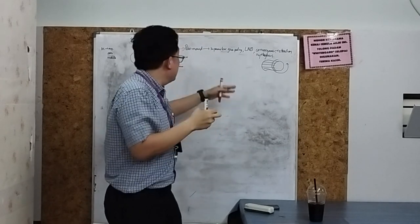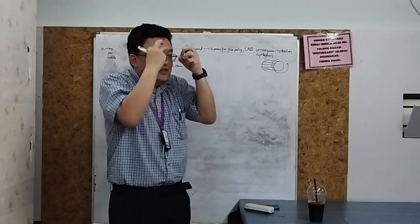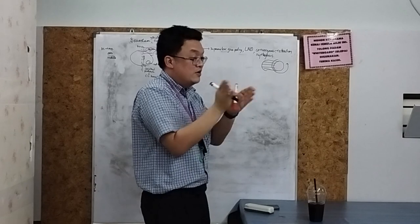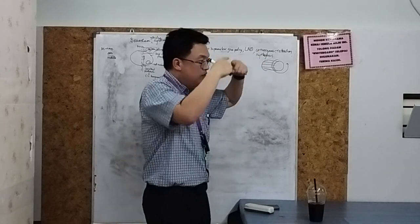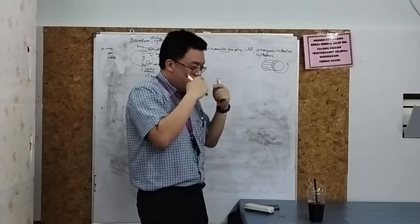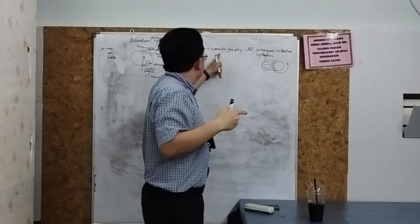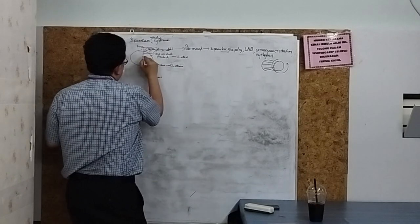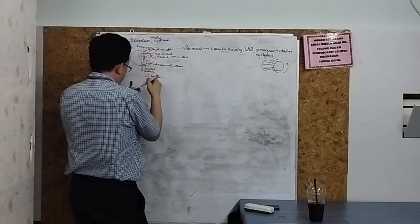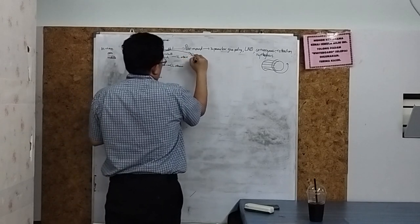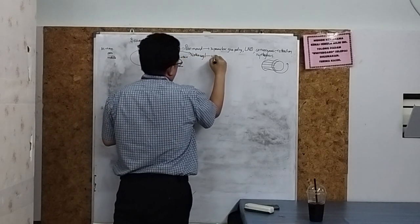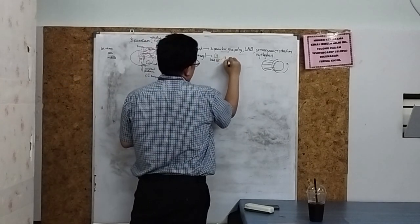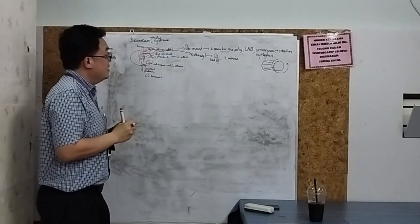You also get convergence-retraction nystagmus in Parinaud syndrome. With an optokinetic drum moving downward, the patient tries to look down and then back up, but because of the upgaze palsy, all the other muscles contract simultaneously trying to pull the eye upward, causing the eyes to converge and retract. If the superior cerebellar peduncle and third nerve are affected together, this is Nothnagel syndrome — third nerve palsy with ipsilateral ataxia.